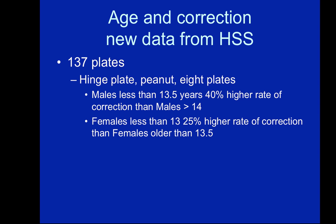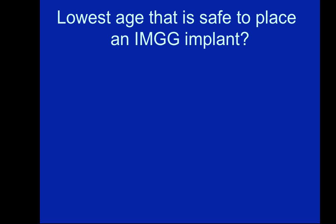I just reviewed our data for the past 10 years, looking at 137 plates — basically equally distributed between hinge plates, peanut plates, and eight plates. As many other studies have shown, when the kids are younger — males younger than 13.5 — they have a 40% higher rate of correction per year than older males. Females less than 13 have a 25% higher correction rate than older females.